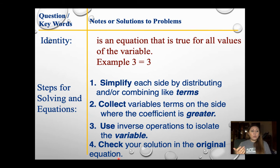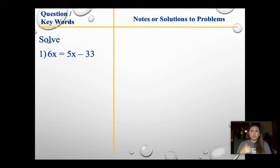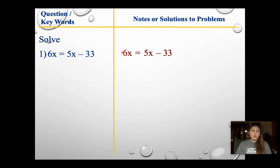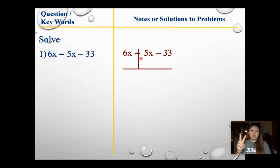Moving on, we're going to solve some equations. Let's start with something very basic: 6x equals 5x minus 33. Step one — distribute or combine like terms. There's only a 6x on one side, and I can't combine those two because they don't have the same variable. So step one is completed. Step two is to do the inverse operation, so I'm going to do my upside down T.